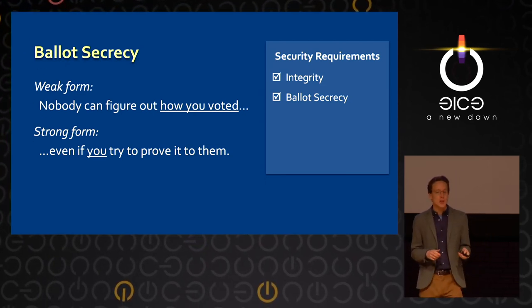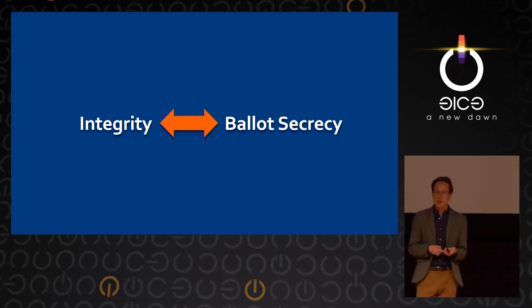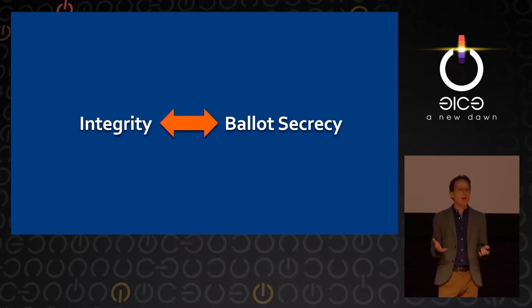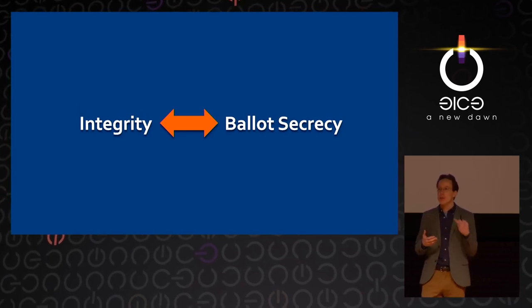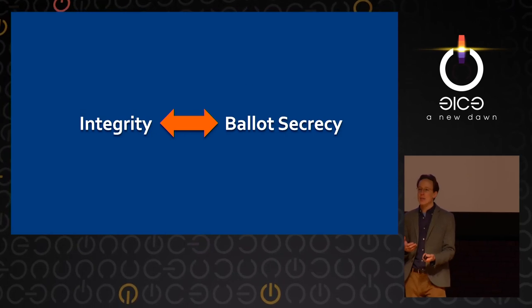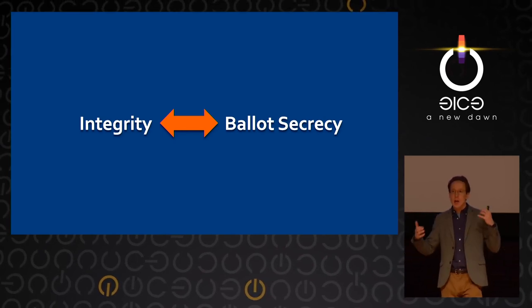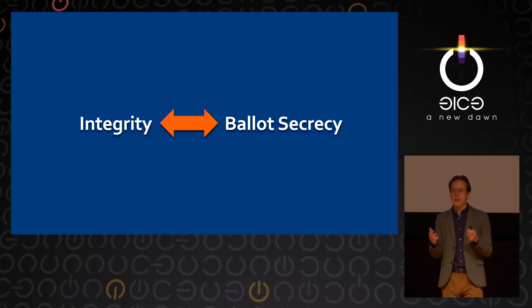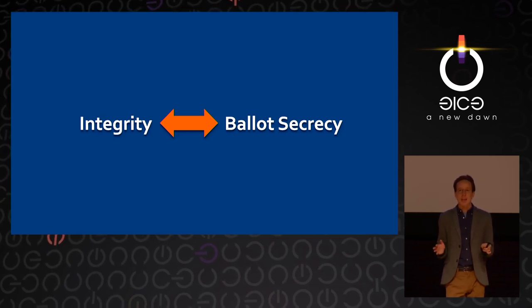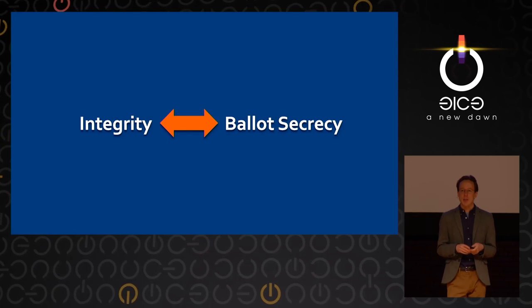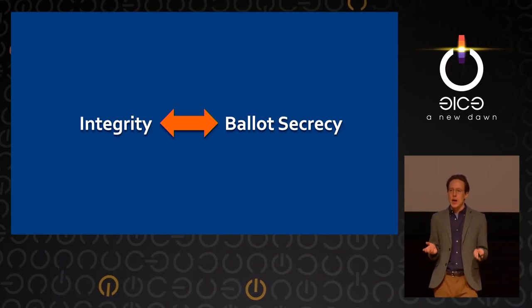E-voting is difficult largely because integrity and ballot secrecy are in tension. Many defenses we'd normally use to increase integrity — like receipts in e-commerce, bank statements, or accounting tables where money in and out is totaled — are very difficult or impossible to implement while maintaining a strong secret ballot. So we need very different mechanisms to achieve an e-voting system that provides these critical properties.